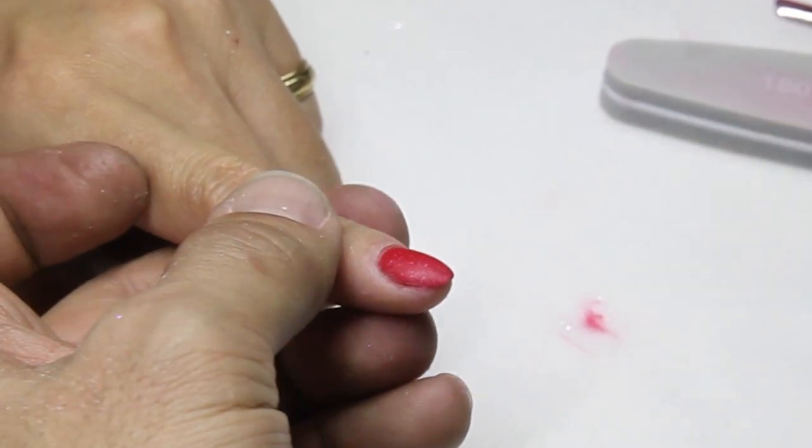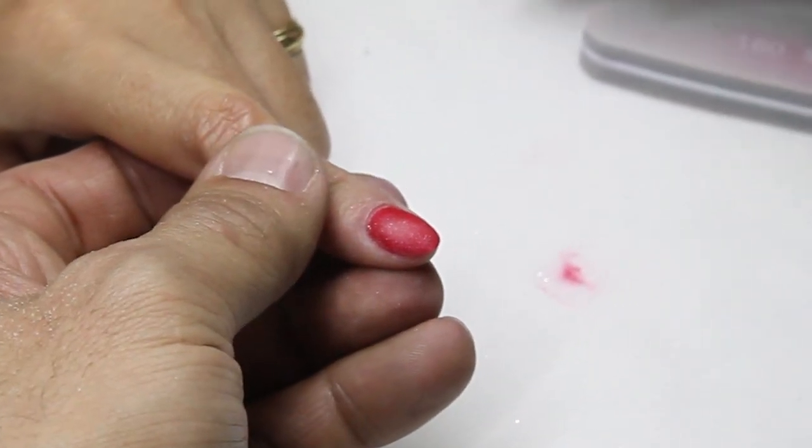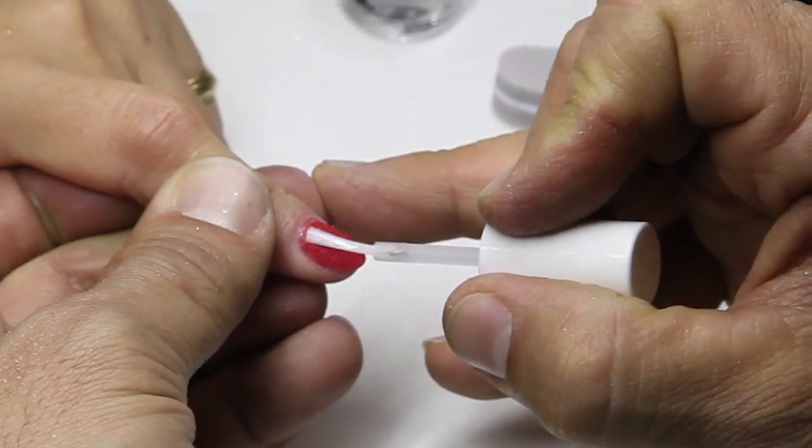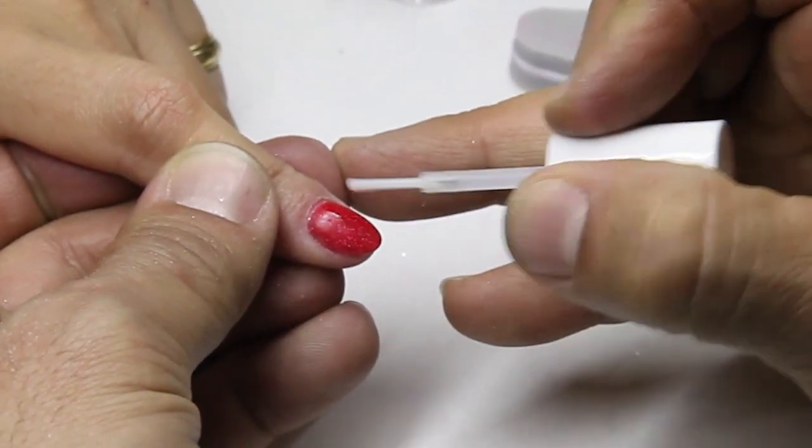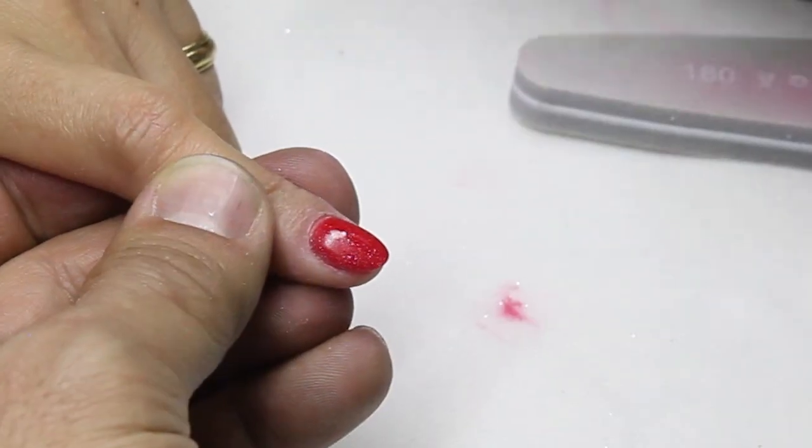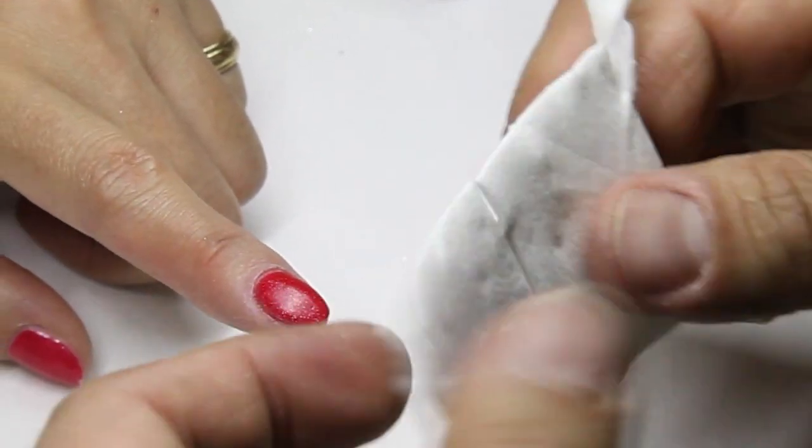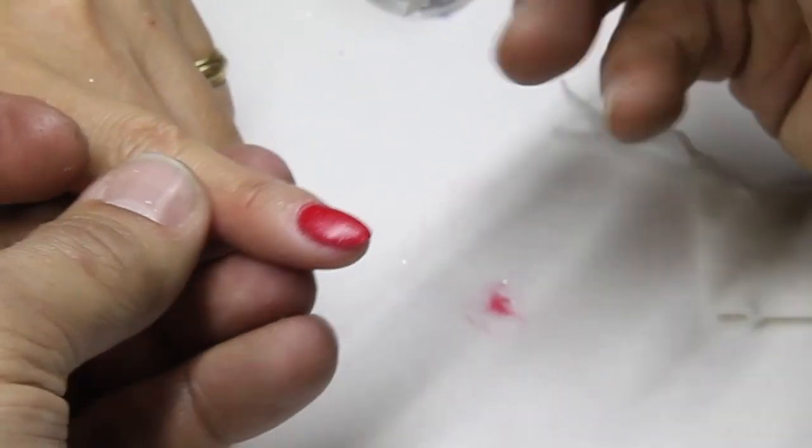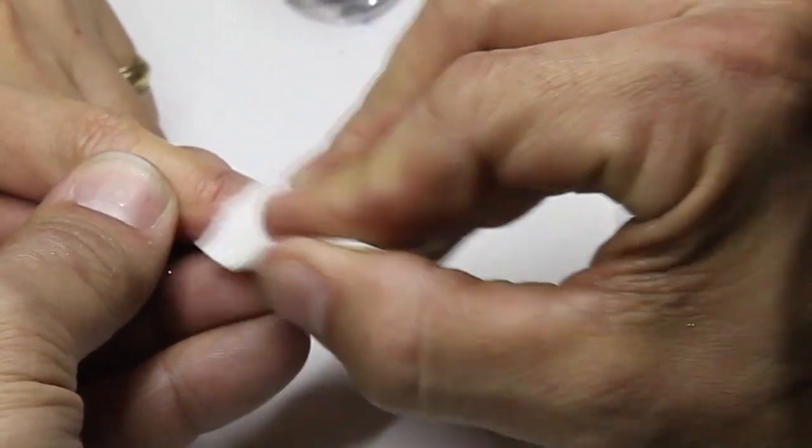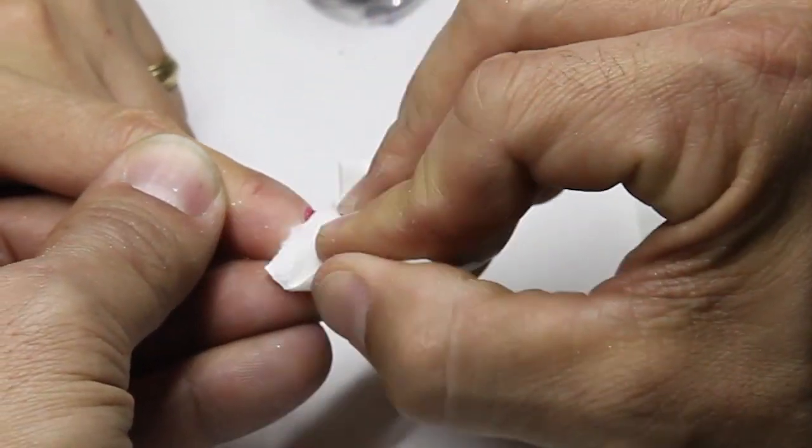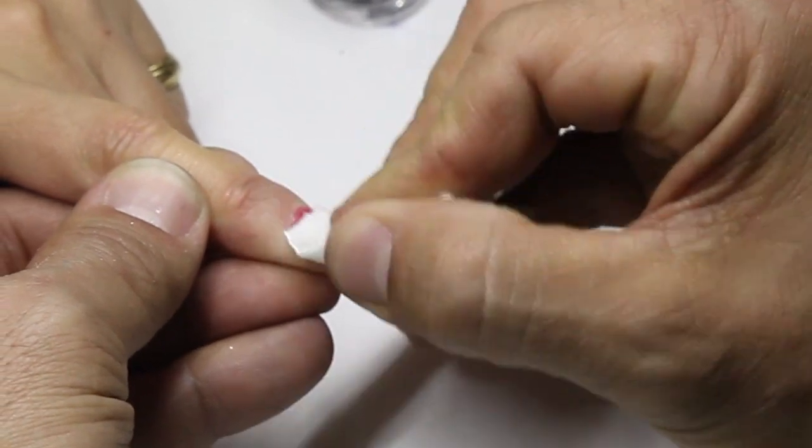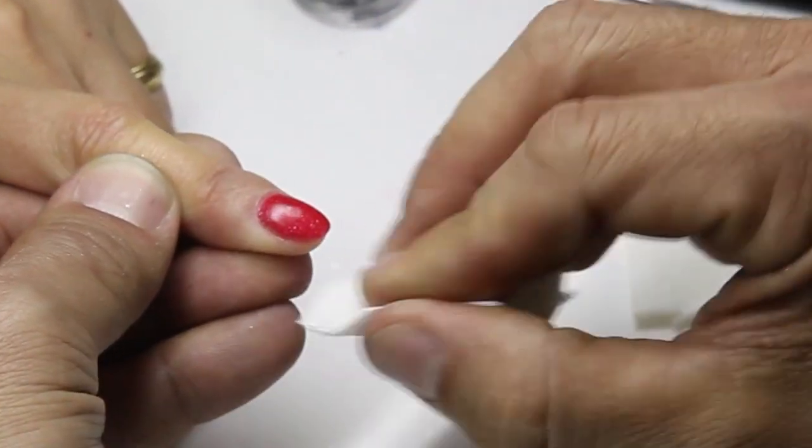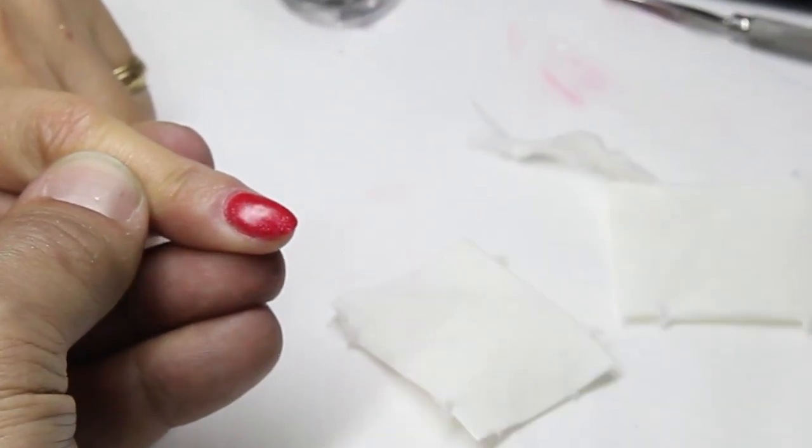Now you have to take number three, which is the activator. I have to put it over the surface just like this. You see this? Dry, dry. You must lightly buff the surface to smooth it out. It's going to dry it and keep it all even.